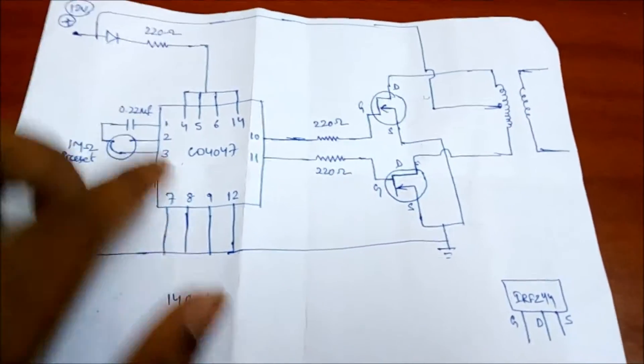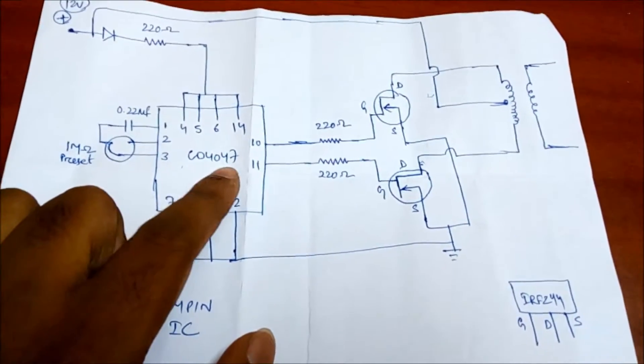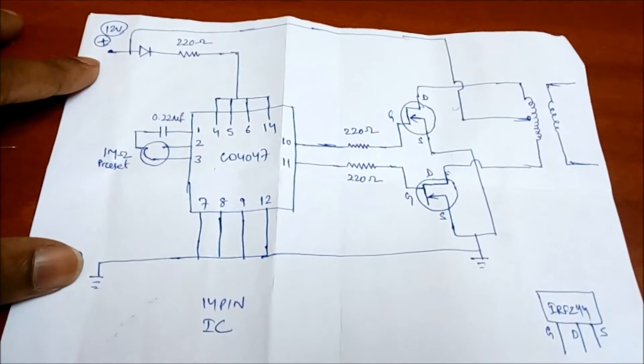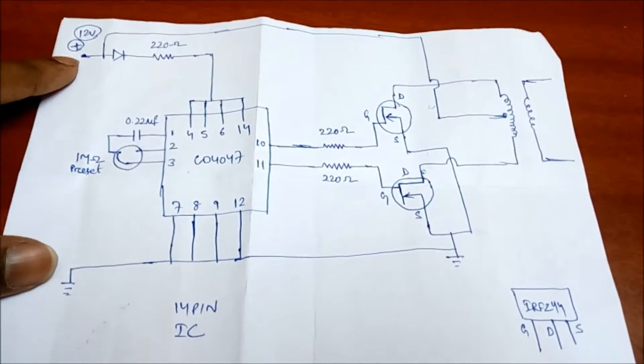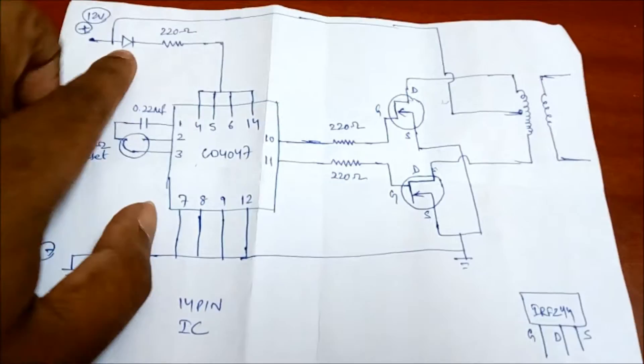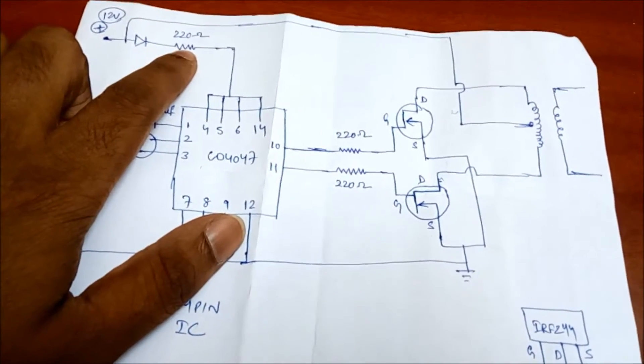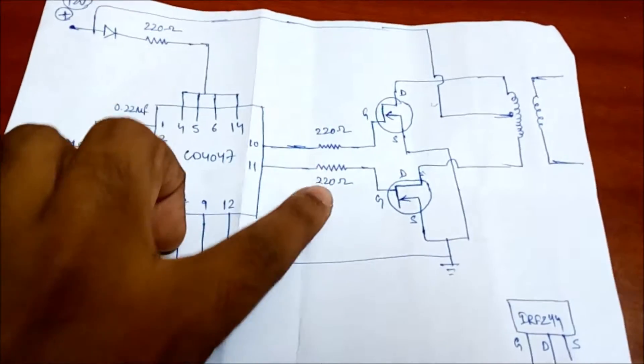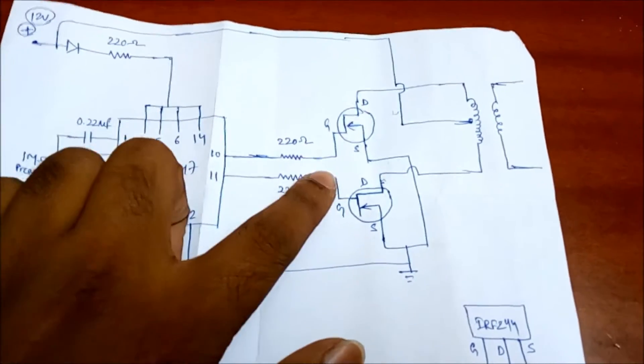So what are the needed parts here? One CD4047 IC is required, that is a 14-pin IC. And I need a 12-volt 7-ampere battery that is used in your UPS or inverter. And next, there is a diode, and using a 220-ohm resistor that is a quarter-watt resistor. I need three 220-ohm resistors over here and two IRFZ44 MOSFETs.